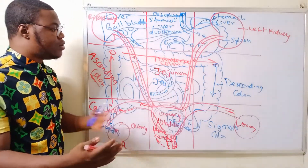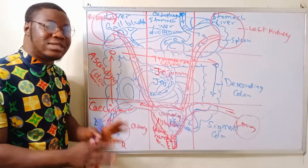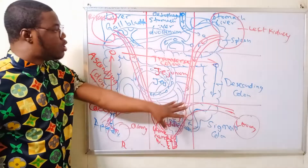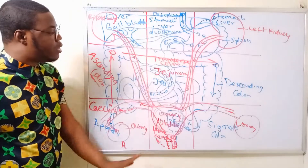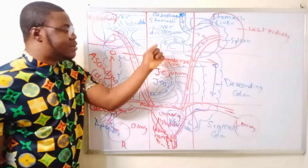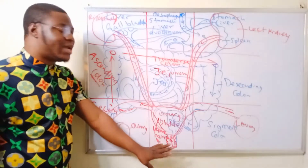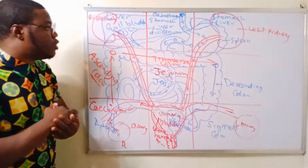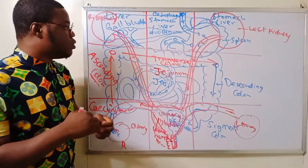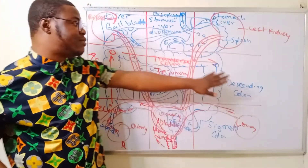You can rewind the video and draw it out if you'd like, but the key takeaway is to identify the organs in each abdominopelvic region. That brings us to the end of this class. In our next class, we will be talking about the posterior cavity.